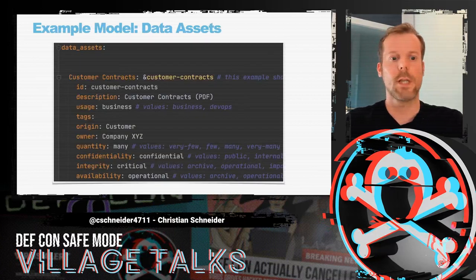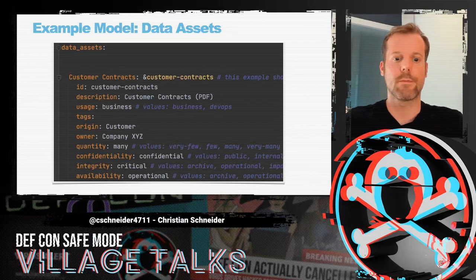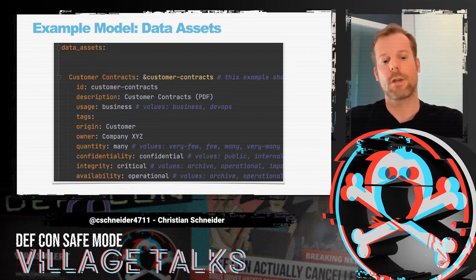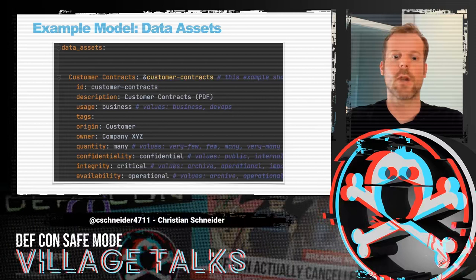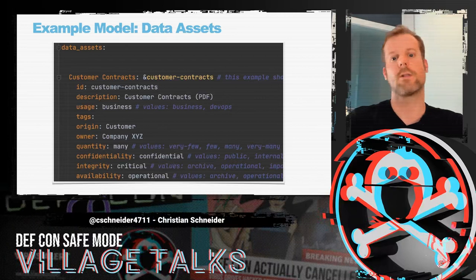Here you see the YAML example of data assets — for example, customer contracts — which has some kind of owner and origin. Especially the confidentiality, integrity, and availability ratings are interesting. So you can rate the data assets on how confidential they are.